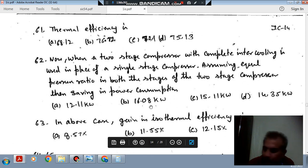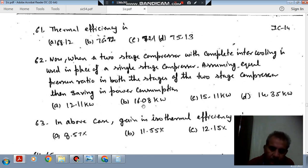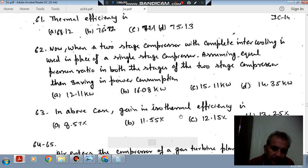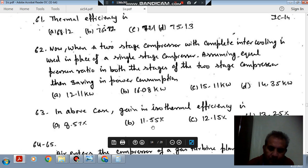Then saving in power consumption is (a) 12.11 kW, (b) 16.08 kW, (c) 15.11 kW, (d) 14.3 kW. Question 63: in the above case, gain in isothermal efficiency is (a) 8.57%, (b) 11.55%, (c) 12.15%, (d) 13.25%.